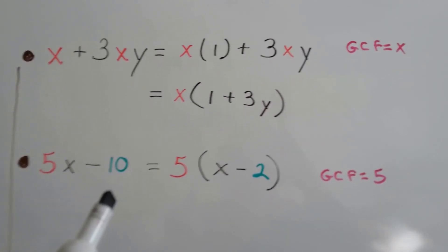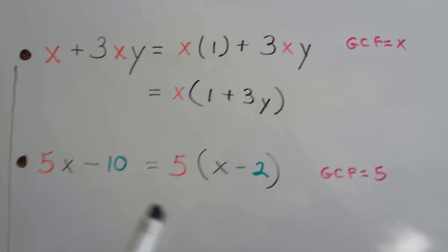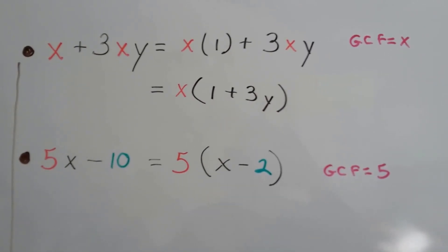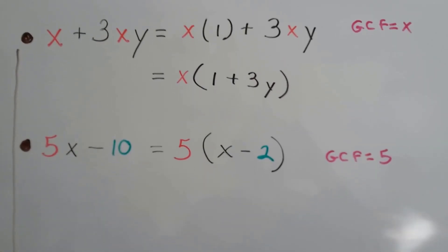If we have 5x minus 10, the greatest common factor is 5. 5 can go into both of these. That would give us 5 times x minus 2. If we use the distributive property, it would get us back to 5x minus 10.